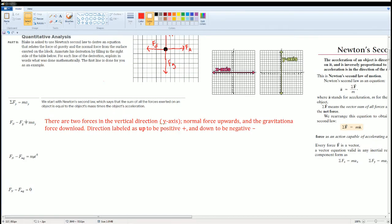The next step I described as: there are two forces in the vertical direction, which is your y-axis, the normal force upwards and the gravitational force downwards. The direction labeled as up as positive and down as negative. Here you see F_N which is pointing up, which is positive, and I put a negative on the force gravity because it's going down.